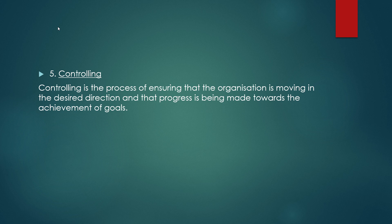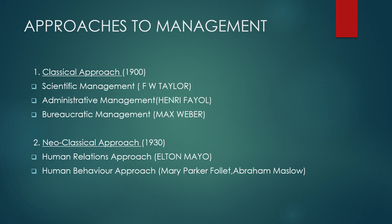The last function is controlling. Controlling is a process of ensuring that the organization is moving in the desired direction and that progress is made towards the achievement of goals. It involves measuring actual results and comparing those actual results with the standards of performance, finding out the reason for deviations, and taking corrective actions when necessary. In every organization, they decide certain standards of performance, compare them with actual performance, and if any deviations occur, they rectify and take corrective actions.